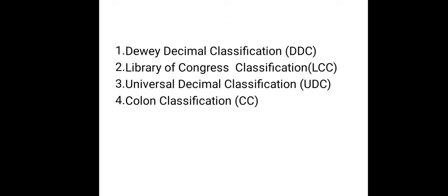These are the four classification schemes we discussed today. The first one is Dewey Decimal Classification, DDC. The second one is Library of Congress Classification, LCC. The third one is Universal Decimal Classification, UDC. The fourth one is Colon Classification, CC.